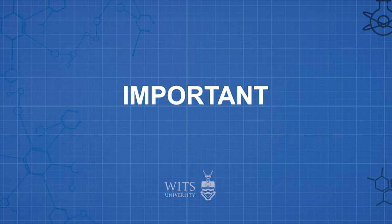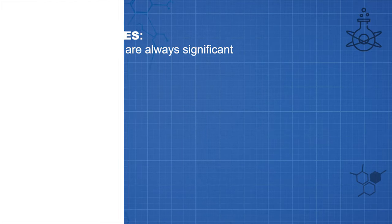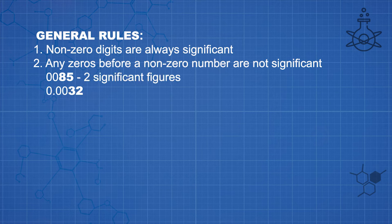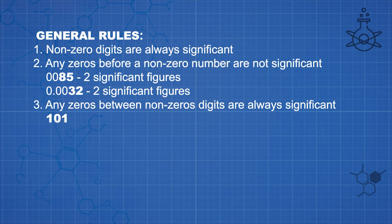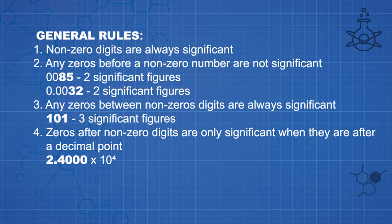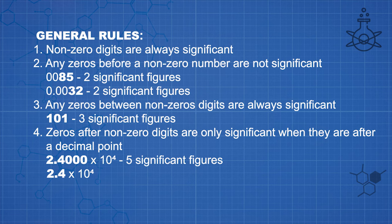To know how many significant figures there are in a value, remember these simple points. Non-zero digits are always significant. Any zeros before a non-zero number are not significant — for example, 0.0085 has just two significant figures, and 0.0032 has two significant figures. Any zeros between non-zero digits are always significant — for example, 101 has three significant figures. When it comes to zeros after non-zero values, there are two ways of describing significant figures. Take the number 24,000: we could write this as 2.400 × 10⁴, which has five significant figures, or as 2.4 × 10⁴, which has two significant figures — the same number but with completely different implied accuracy.